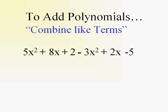Let's combine like terms here. I use the circle square triangle method. Just circle the ones that are alike. The x squareds are alike.